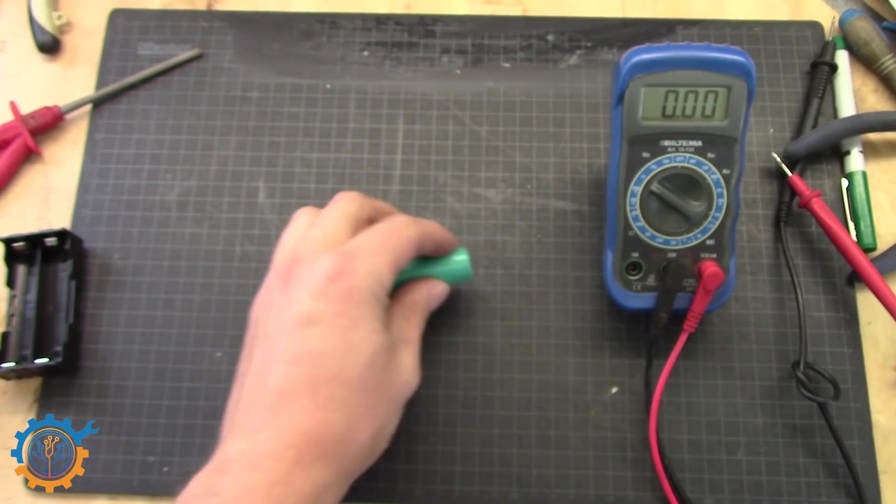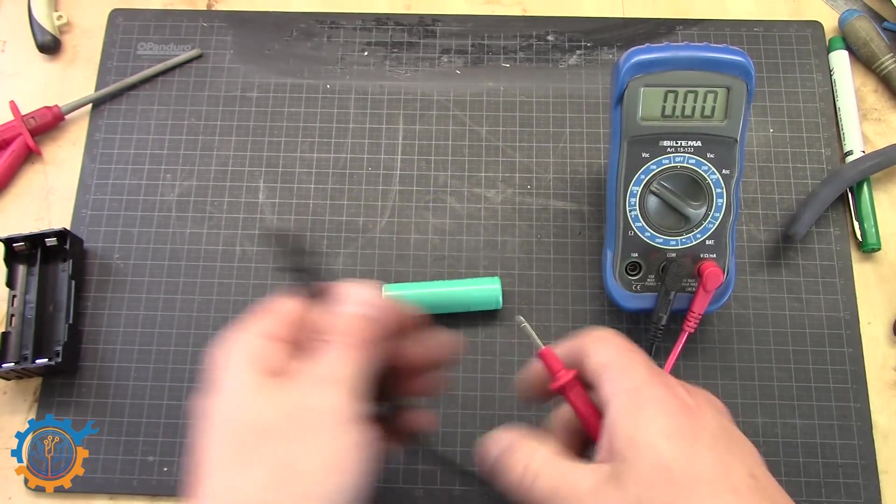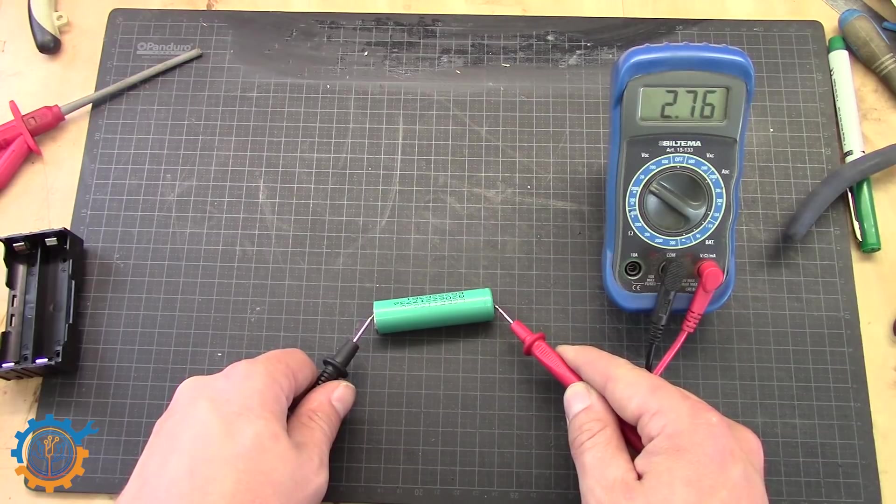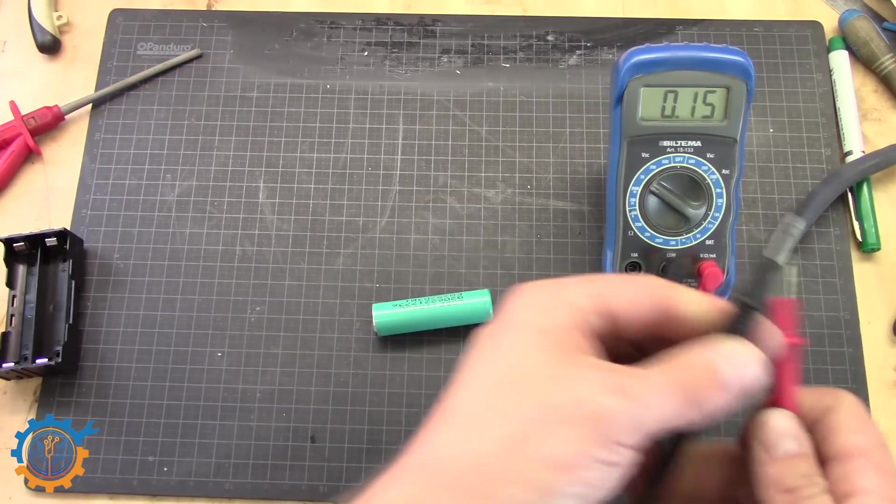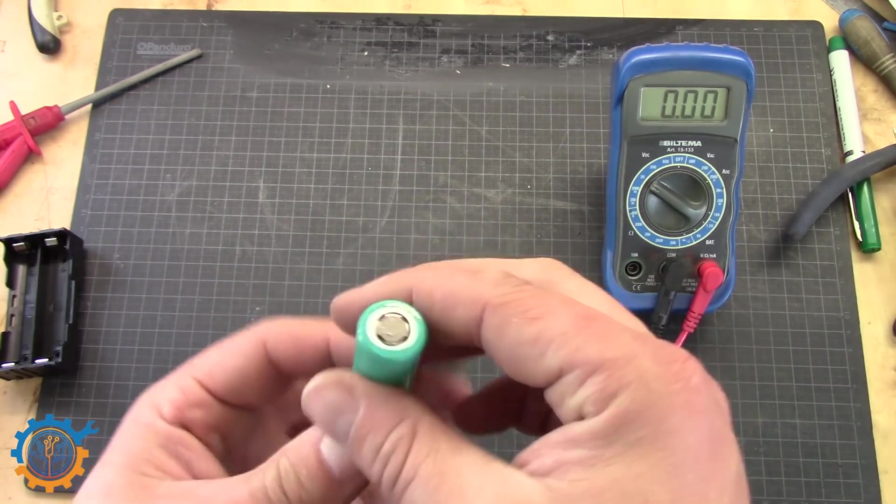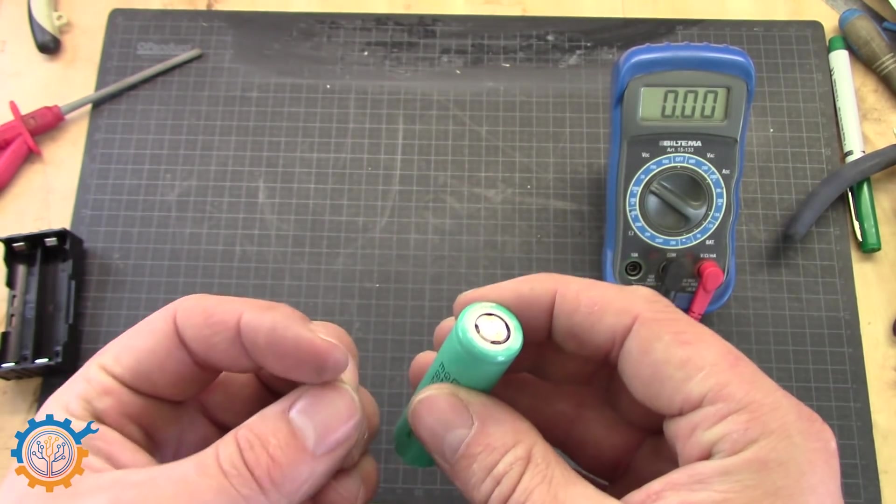By doing that, you will be releasing the pressure inside. As you can see now, we suddenly have 3.76 volt. Sometimes you even can hear the pressure being let out.